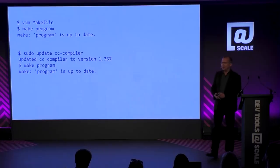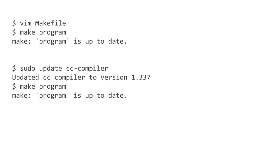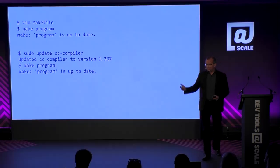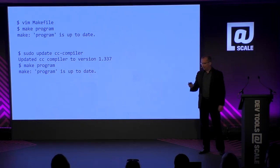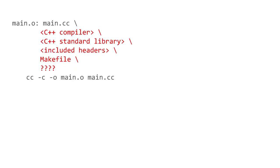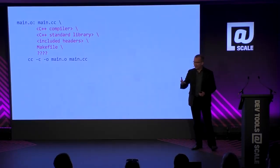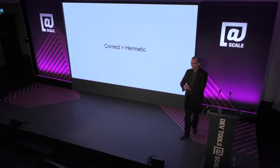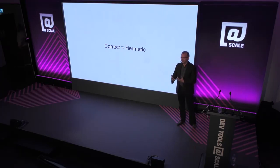What's the next problem with Make? You edit your Makefile, make your program, and it says 'program is up-to-date.' Then you upgrade your CC compiler to a new version, run make again, and again it says up-to-date — it discovered no dependency changes. What you actually need to write in your Makefile is a whole list of dependencies: your object file doesn't depend only on your .cc file, it also depends on the compiler, the standard library, the headers, the Makefile itself, and maybe other things. So another thing we really want is for the build system to be correct.